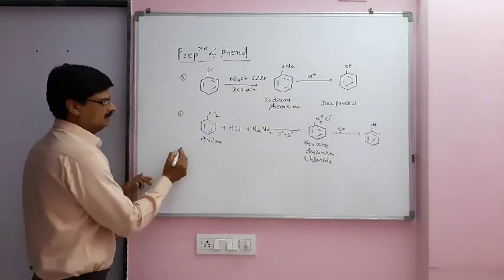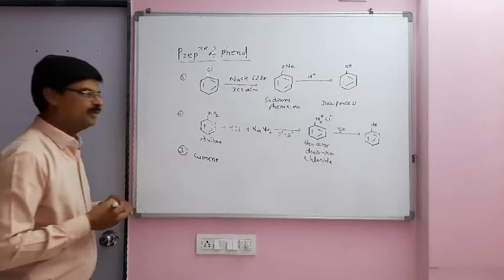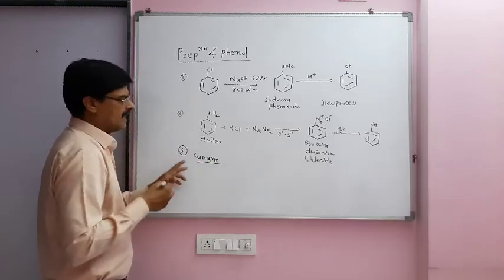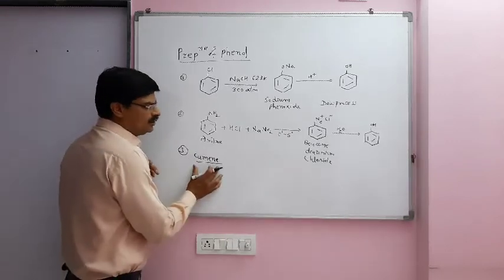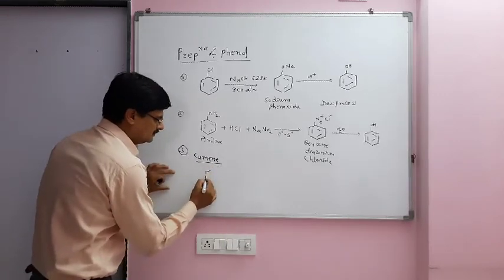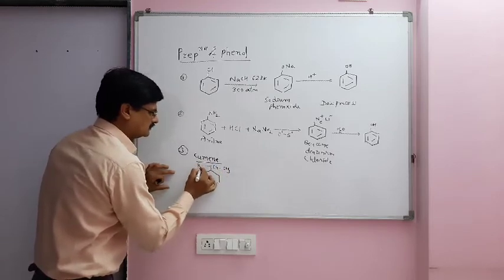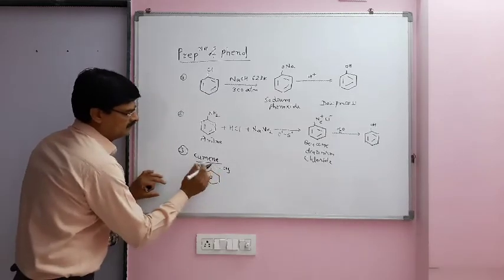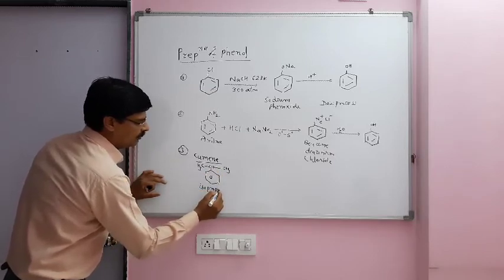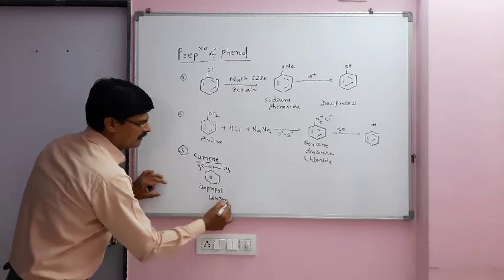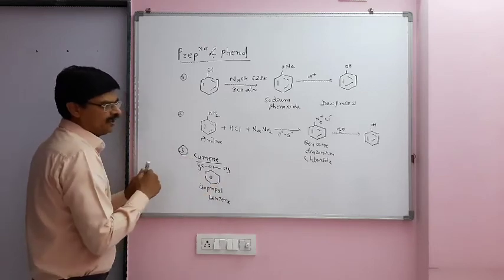The third method is known as Cumene's process. This is the largest method utilized for the preparation of phenol in the world. In the Cumene method, we start with isopropylbenzene, which is also known as cumene.